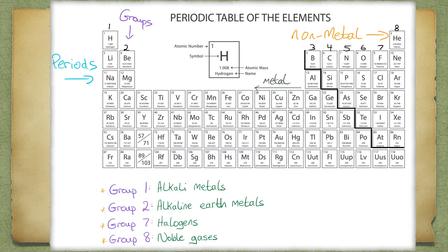Each period represents an orbit. For instance, Hydrogen and Helium contain one orbit. Lithium to Neon have two orbits. The number of orbits increases by one as you go down a group. This either enhances or diminishes some of the properties of elements within the groups. You will learn about this later in the lesson.